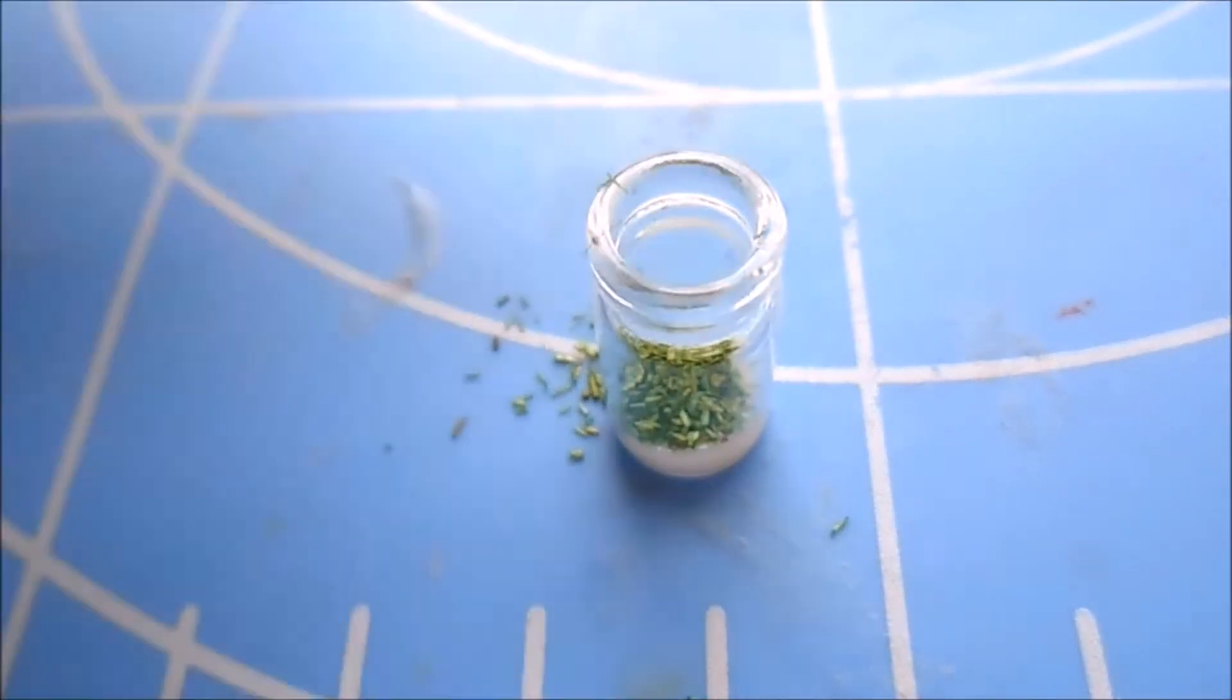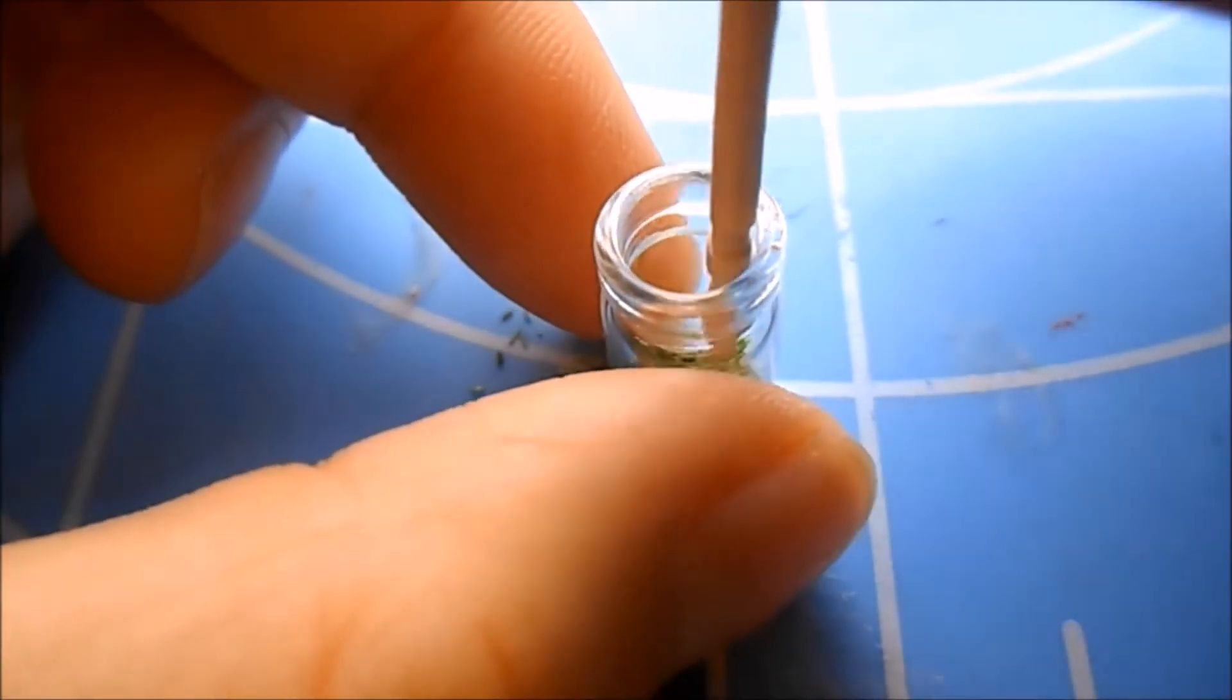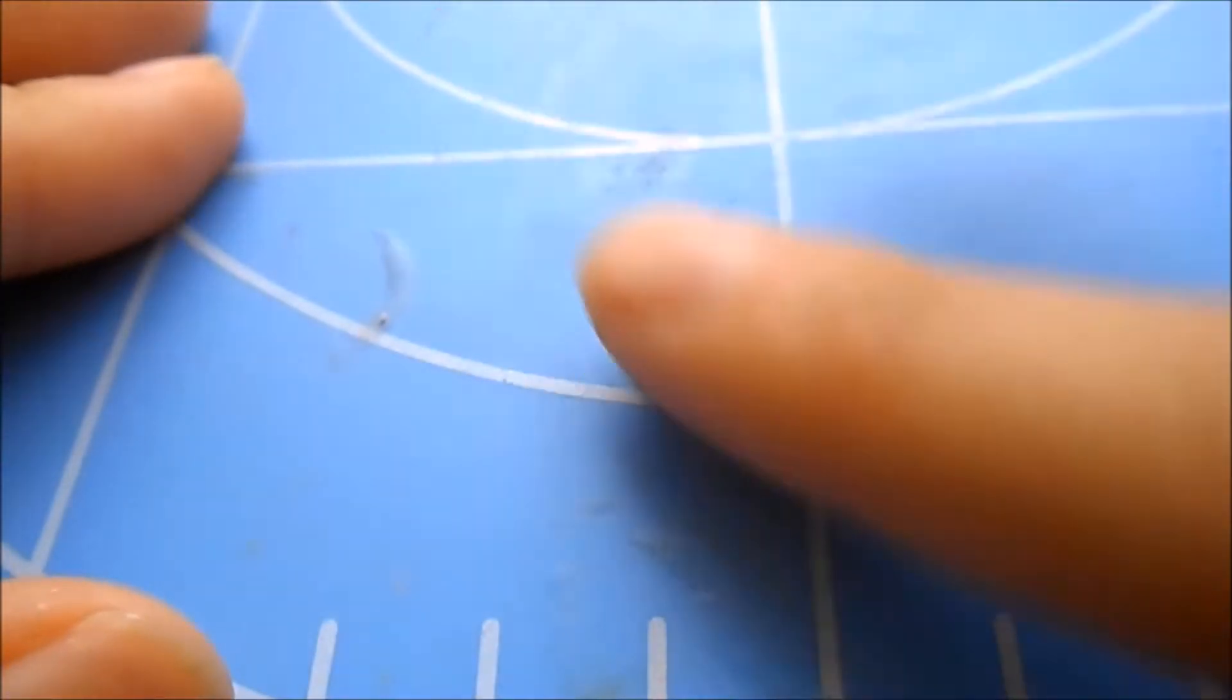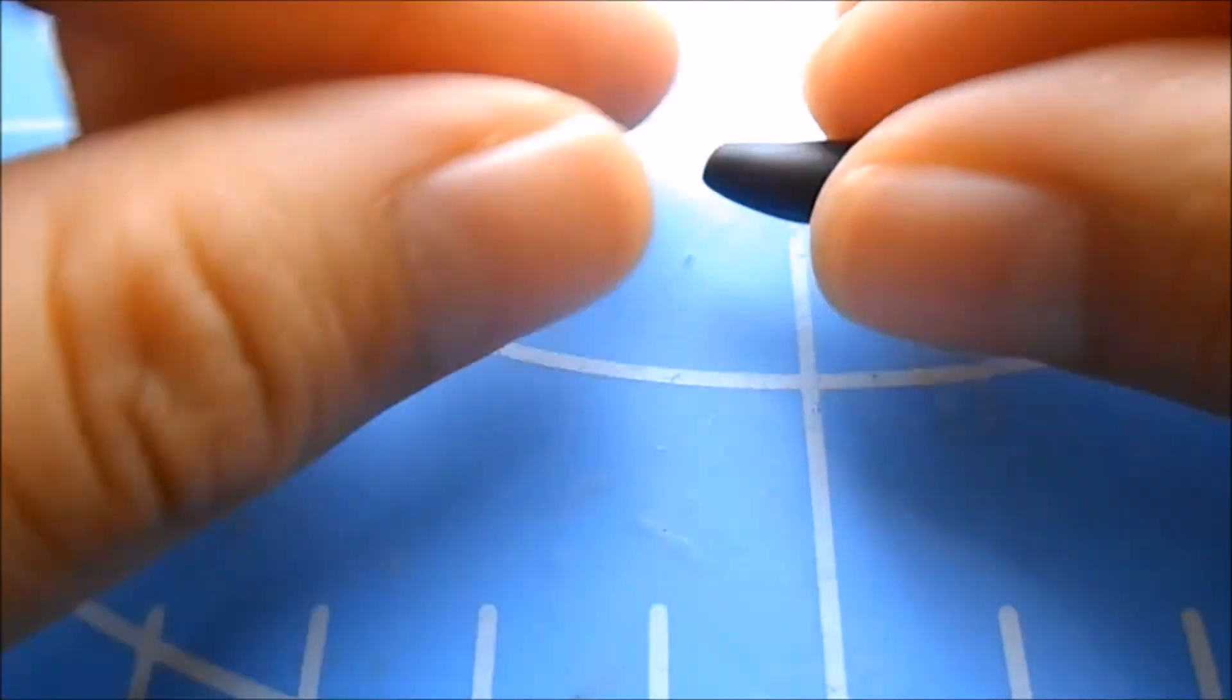Next I'm just going to add some of the fake grass into the bottom and just pressing that down with a toothpick to make sure that all the grass is covered by glue. After that we're just going to make no face.